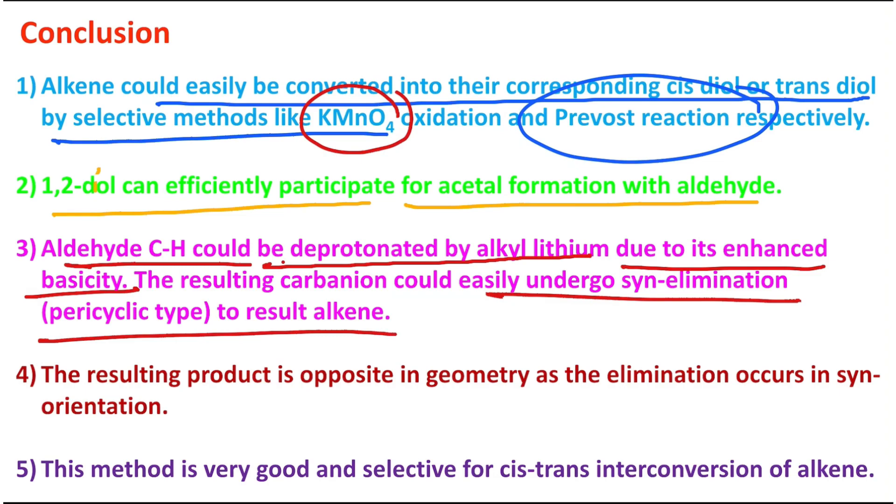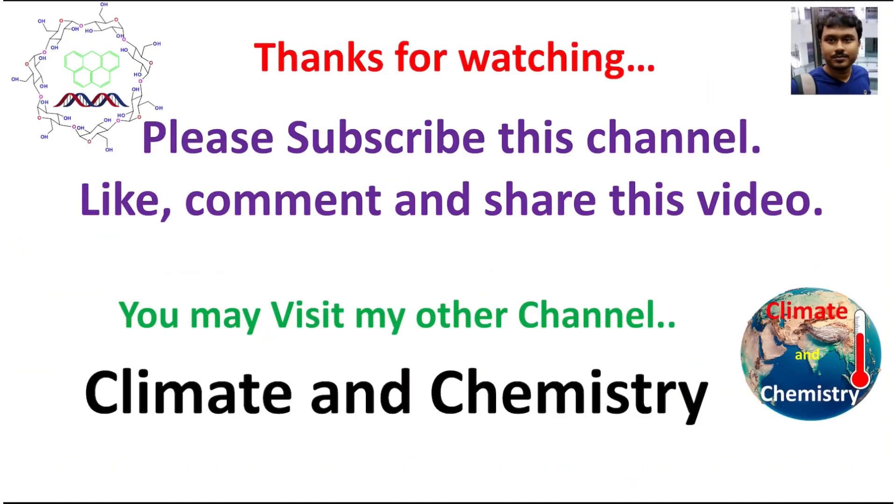Finally, the resulting product is opposite in geometry because the elimination is actually syn elimination. So whatever we started with respect to that alkene, the ultimate product will be trans. This method is actually very good and selective for cis-trans interconversion of alkene.